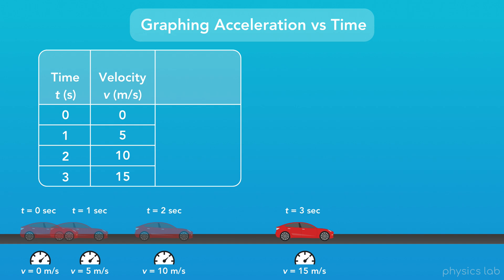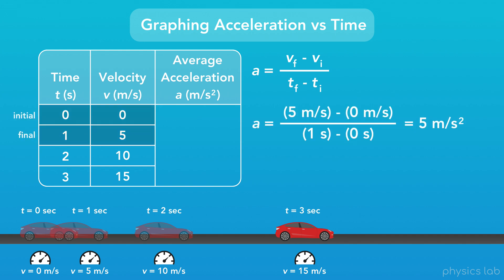Now what we can do is calculate the average acceleration of the car between each pair of time points, using our equation for acceleration. And I'll do the math for us. What we'll find is that the acceleration between seconds 0 and 1 is 5 meters per second squared.